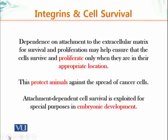Dependence on attachment to the extracellular matrix for survival and proliferation ensures that cells will only proliferate or live in their respective region. For example, a liver cell that detaches and travels to heart or brain tissue will not be able to grow there because the quality of ECM in those locations is different from that present in the liver.